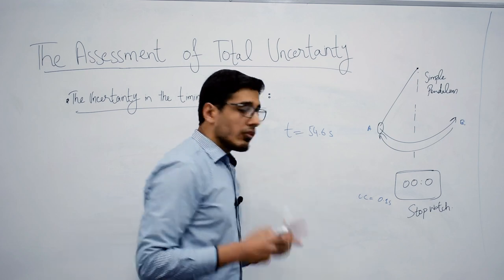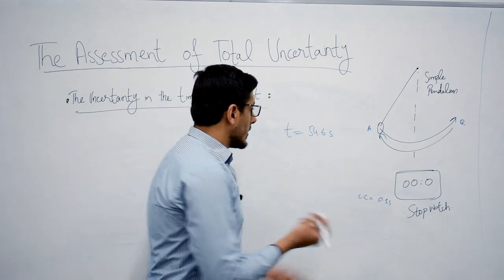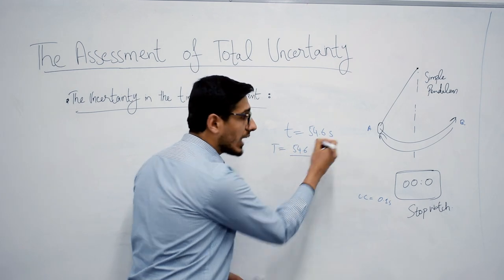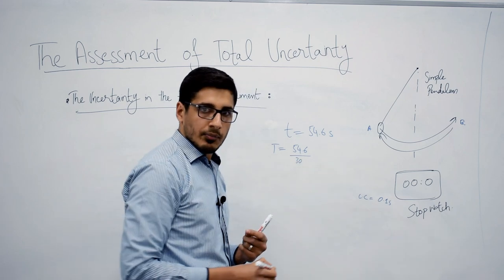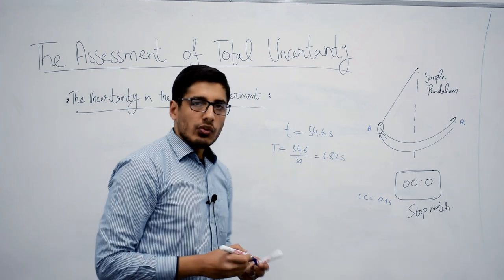Now first of all we need to calculate the time period of this simple pendulum, which can be calculated simply by dividing this time for 30 oscillations by 30, and it comes out as 1.82 seconds.